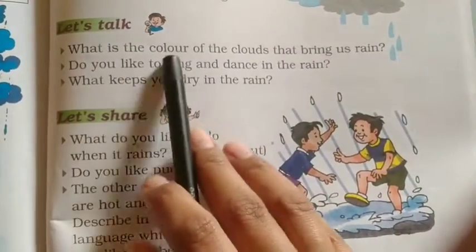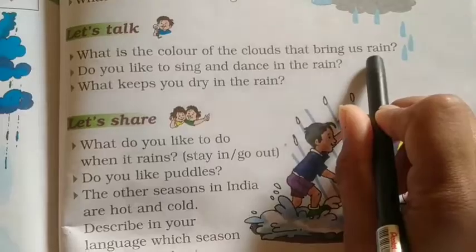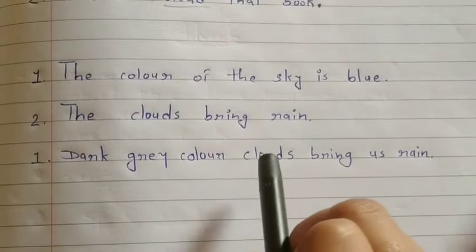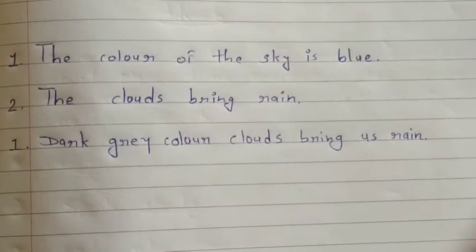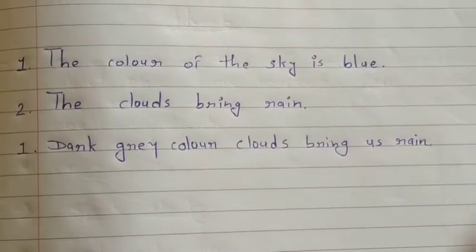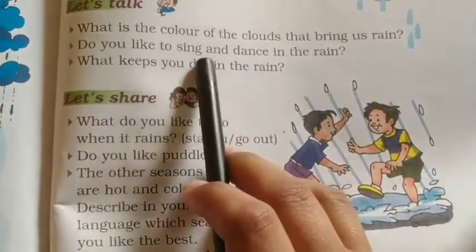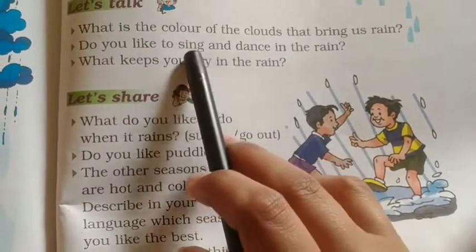Now let's talk. What is the color of the clouds that bring us rain? जो बारिश लेकर आते हैं उन बादलों का color कौन सा होता है? Dark grey color clouds bring us rain — dark grey color के जो बादल होते हैं वो बादल हमारे लिए बारिश लेकर आते हैं. Now do you like to sing and dance in the rain? आपको पसंद है गाना और डांस करना बारिश में? If yes, write yes; if no, write no. What keeps you dry in the rain? Yes — umbrella, फिर raincoat.